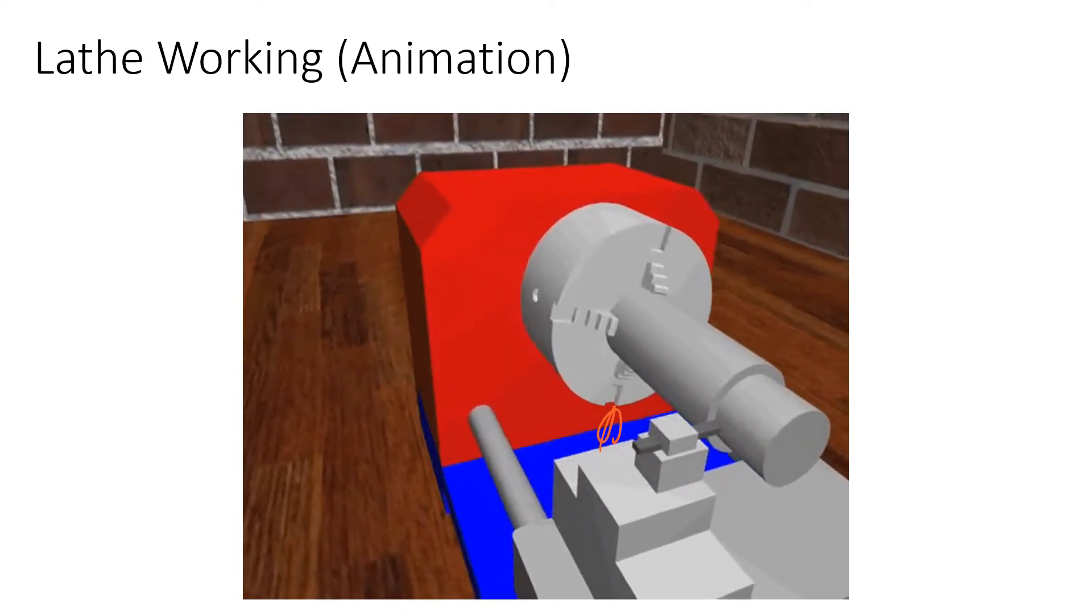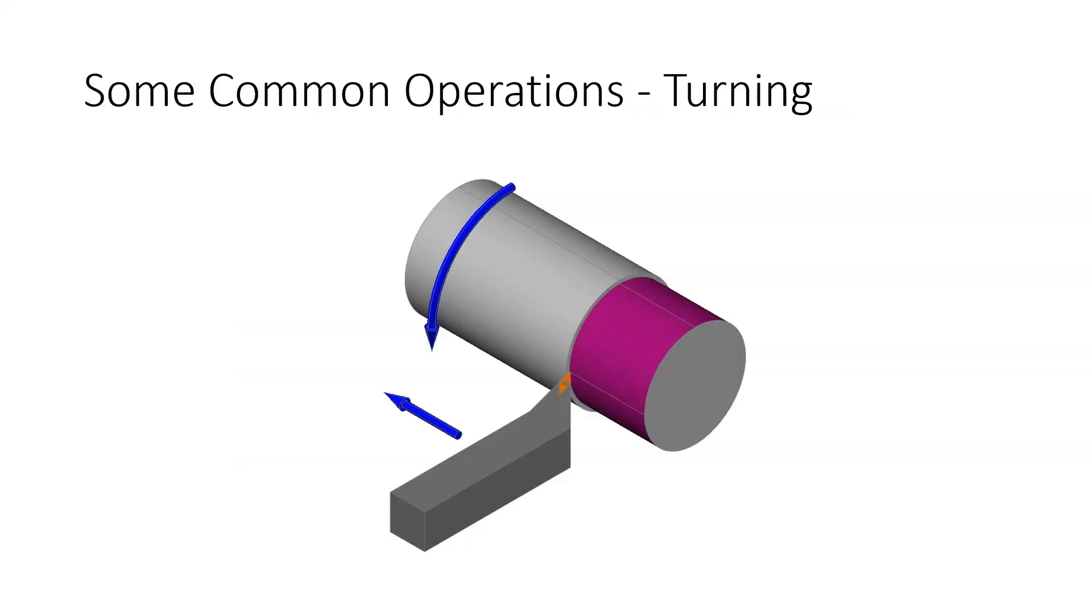Let's see some examples. These are some of the common operations like turning. The previous animation which you saw, it was called a turning operation. The workpiece is rotated and a tool is placed at this point which is then just moved along this axis and it provides a cutting, removing the material layer by layer.